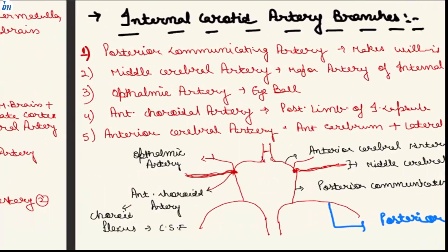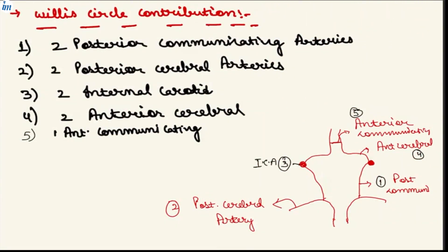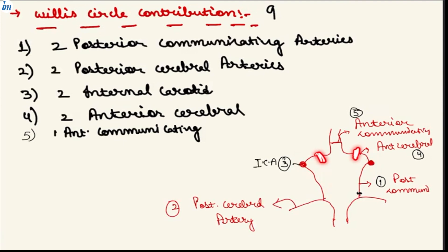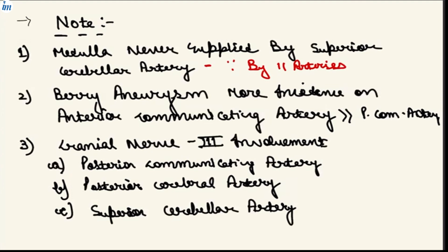The Circle of Willis is contributed by a total of nine arteries: two posterior communicating arteries (right and left), two posterior cerebral arteries from the basilar artery, two internal carotid arteries (right and left), two anterior cerebral arteries, and one anterior communicating artery. Importantly, the middle cerebral artery does not contribute to the Circle of Willis, even though it arises from the internal carotid artery.